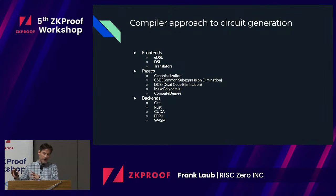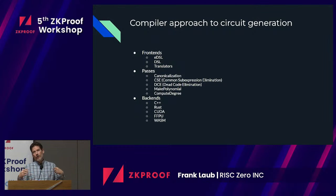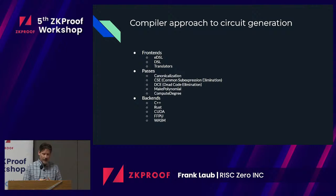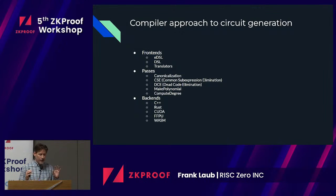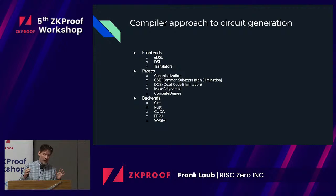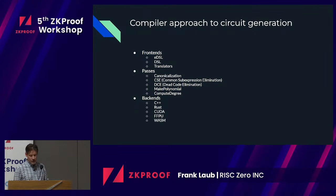Our approach is to have a front-end, a bunch of passes, and then one or more back-ends. Currently we have an EDSL, meaning you write the code describing the circuit in C++. We did that because we didn't want to spend time writing the parser, AST, and full front-end, so we piggybacked on C++, and immediately that gets translated into MLIR. We do all sorts of passes like canonicalization, common sub-expression elimination, and dead code elimination — the standard compiler passes you might see in other systems. Back-ends include C++, Rust, CUDA, and others.